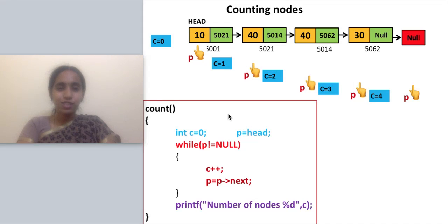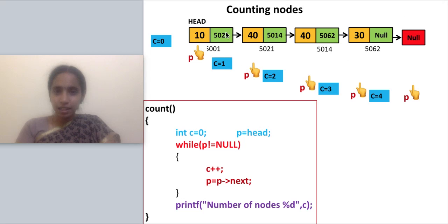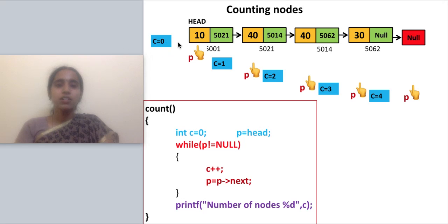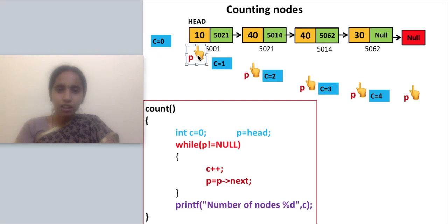We are going to see counting nodes in a singly linked list. Let us start with the manual process. If this is a singly linked list, how will I count? Initially I will have a pointing finger for counting, and for storing the counted value I will have one variable. The counter will always start at zero, so c is equal to zero.